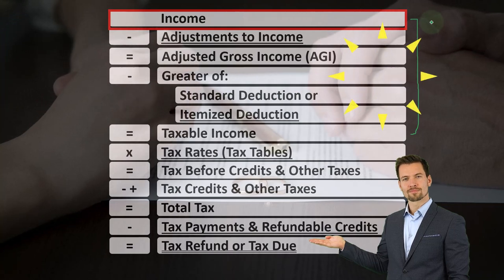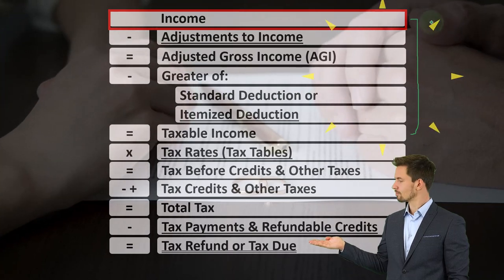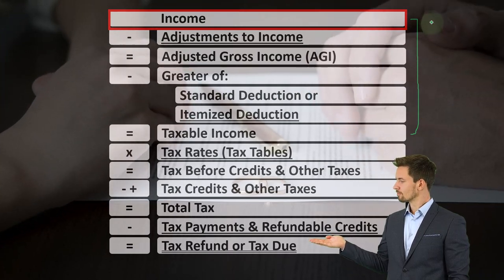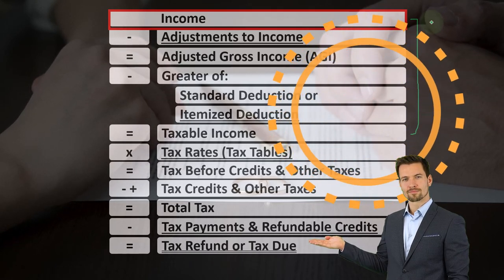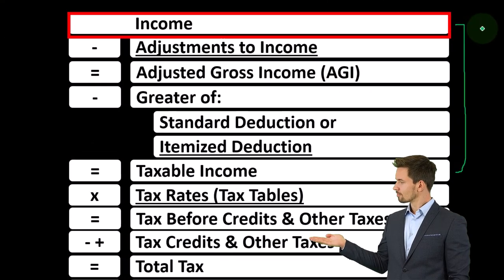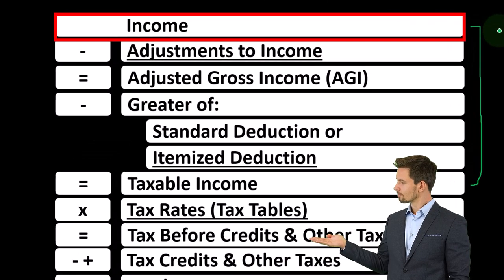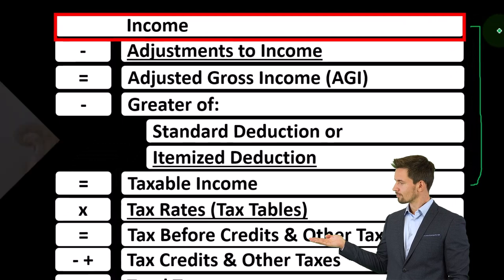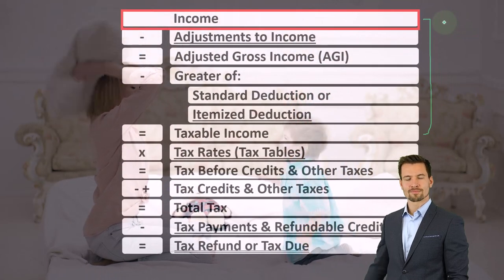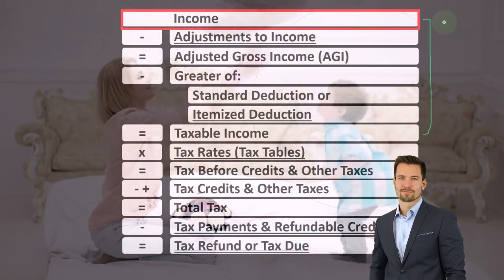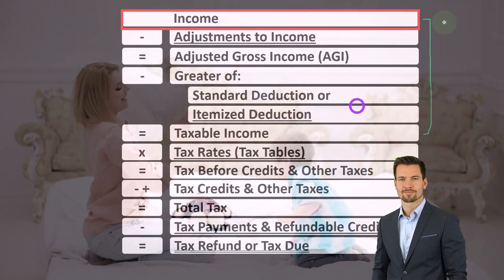We're thinking about a married couple typically separating, a divorce taking place, and then possibly one spouse paying the other spouse. In that kind of scenario, we have two categories of payments that might go from one ex-spouse to another: one being child support, the other being alimony.